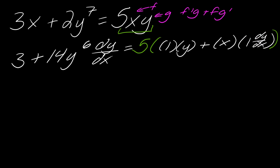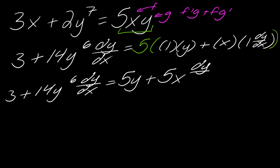So now that I've done all that, what do I do with this 5? Well, now I can just distribute the 5 kind of into this whole thing. So the 5 kind of just comes along for the ride. So I'm left with 3 plus 14y to the 6 dy dx equals, so now this is going to be 5y plus 5x dy dx. And now I need to solve for dy dx.